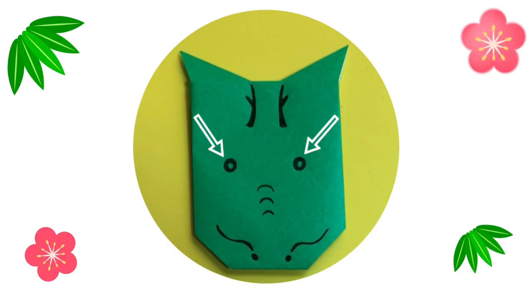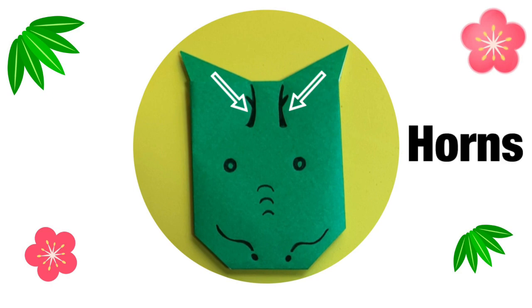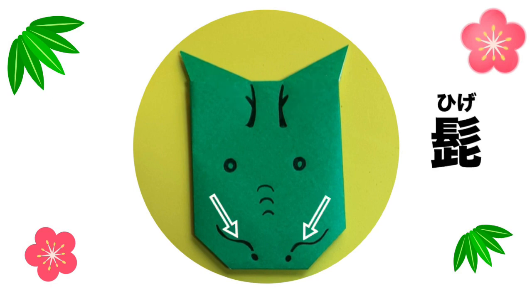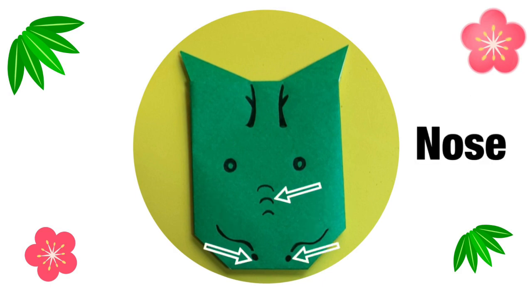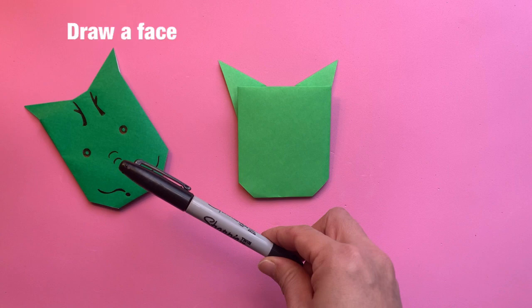Add the eyes, me. Horns, tsuno. Whiskers, hige. Nose, hana. Draw a face, kao wo kaku.